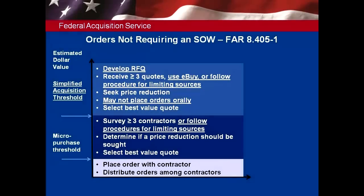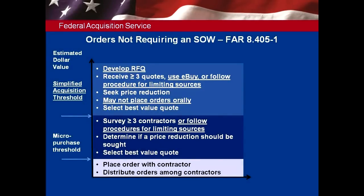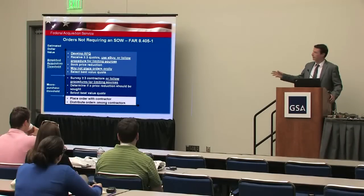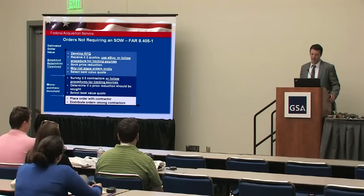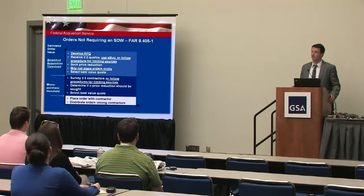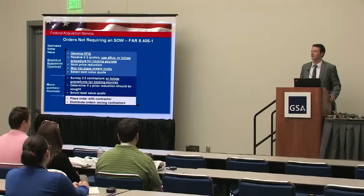The first type of order is one without a statement of work — something fairly simple, like pens and pencils, or fixed-fee services like some trainings. What you have to do when you order depends on the estimated amount of your requirement. If you think you're going to spend under the micro-purchase threshold — $3,000 — you can just order directly off any schedule and place your order with whoever you think is the best value contractor. We'd like you to distribute orders among different contractors and go to small businesses if possible.